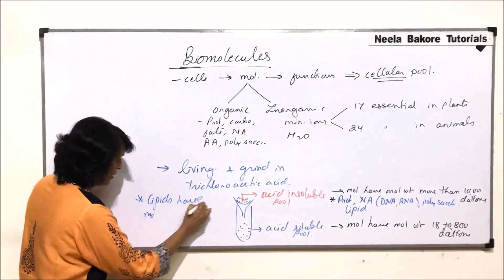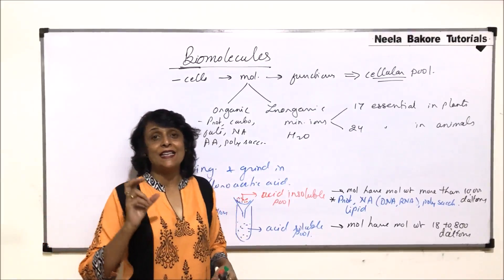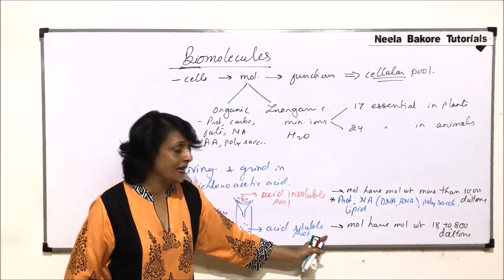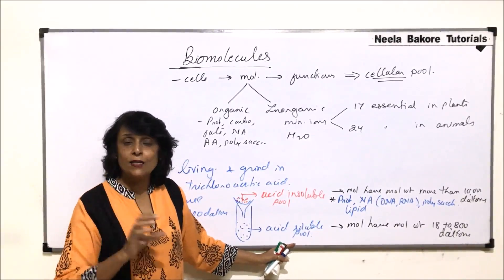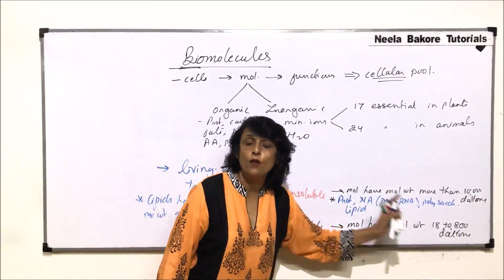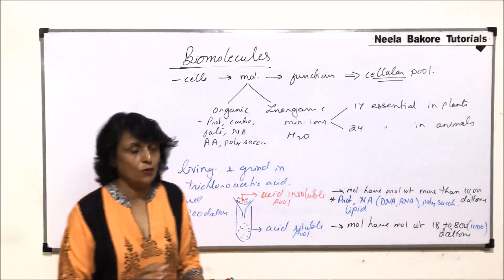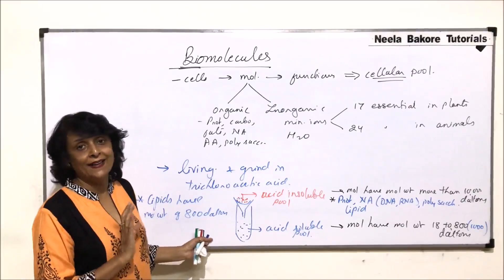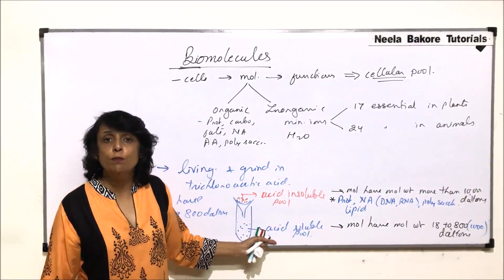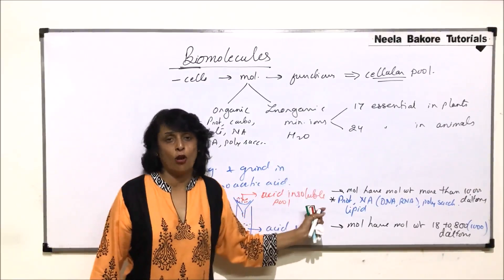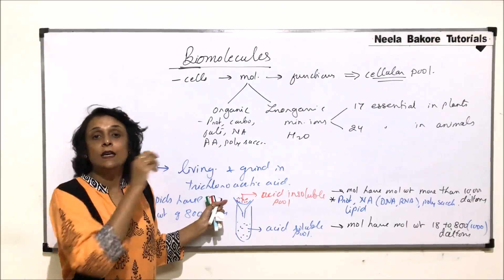Since lipids have a molecular weight of 800 daltons, they should theoretically fall in the acid-soluble pool, which contains biomolecules in the range of 18 to 800 or 1,000 daltons. But lipids are actually found in the acid-insoluble pool. The reason is that when we grind a living tissue in this acid, the lipid part — which is normally part of membranes or structures inside the cell — forms vesicles during grinding.